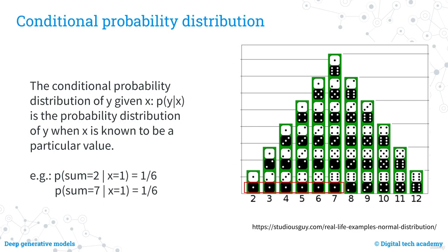In contrast, a conditional probability distribution of Y given X is the probability distribution of Y when X is known to be a particular value. Continuing the dice example: if we know that one die came up as a 1, the probability distribution for the sum changes — the probability of rolling a two becomes equal to the probability of rolling a seven, and both probabilities are 1/6. The conditional probability distribution gives the probabilities of different outcomes given that the value of X is known.